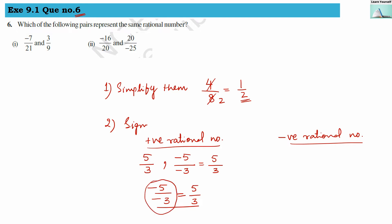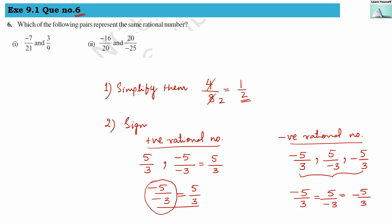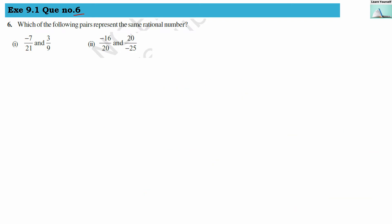For a negative rational number, if one of the numbers carries a negative sign — whether the negative sign is in the numerator, in the denominator, or written in front — all these forms represent the same number. So minus 5 by 3 equals 5 by minus 3 equals minus 5 by 3. These three forms are equal and are considered the same negative rational number.